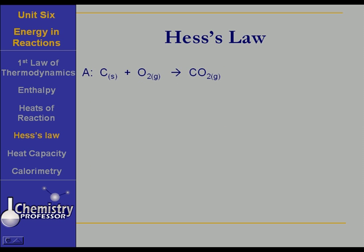Suppose we take process A, and we're going to take carbon solid and burn it in oxygen gas and get carbon dioxide gas. And the delta H for this is an exothermic process, so it is minus 393.5 kilojoules.